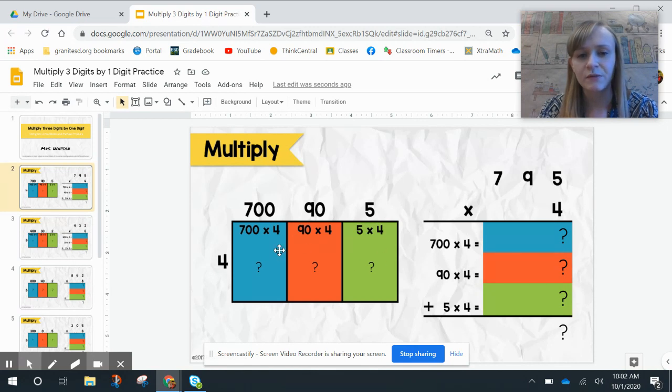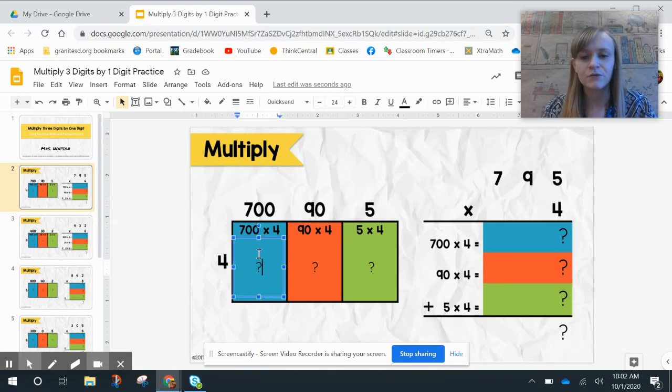Inside each of the boxes on our first problem, it's already showed you what you need to multiply. In order to type in the answer, you just click where the question mark is. You press backspace, and then you type in your answer. So 4 times 7 is 28, and then it's in the 100th place, so I add two zeros.